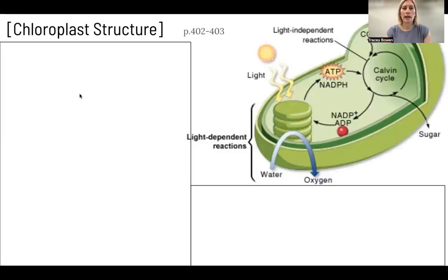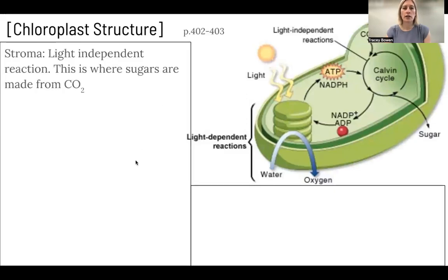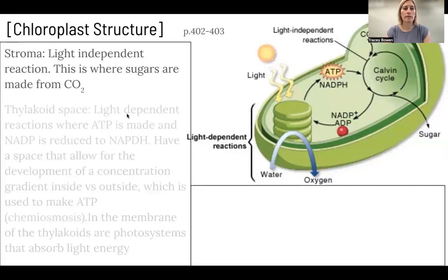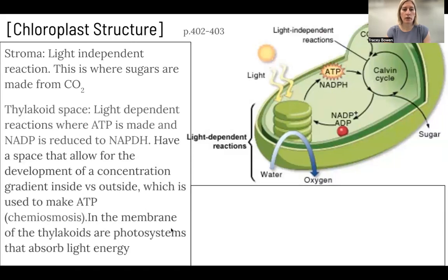First we need to understand the chloroplast structure. The first thing we're thinking about is the stroma — this is where the light independent reactions are happening, and this is where sugars are going to be made from carbon dioxide. This is kind of like the matrix in the mitochondria. Then we're looking at the thylakoid space, which functions the same way as the intermembrane space in mitochondria. This is where the light dependent reactions are happening, where ATP is made, and where NADPH — P as in photosynthesis — is going to be reduced. Reduction is gaining hydrogen and an electron.